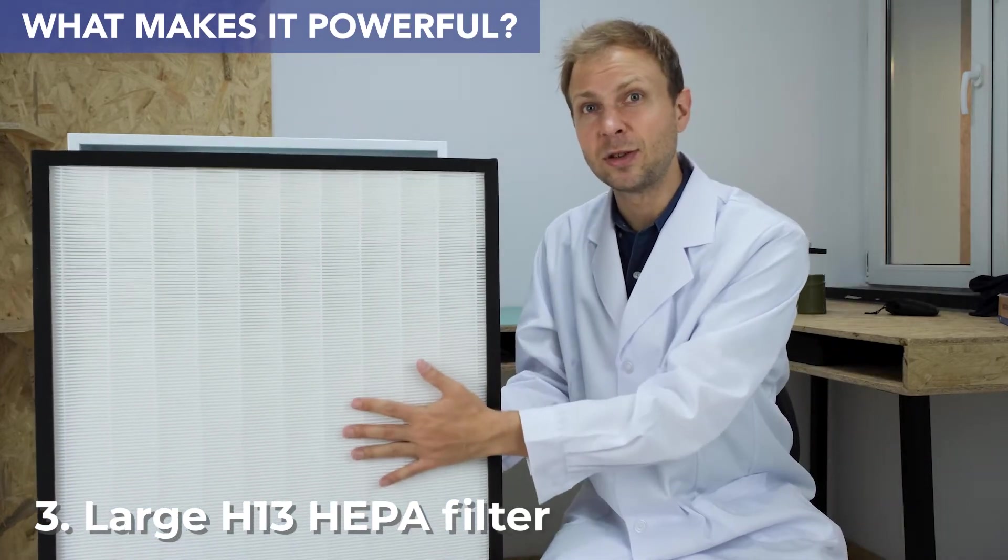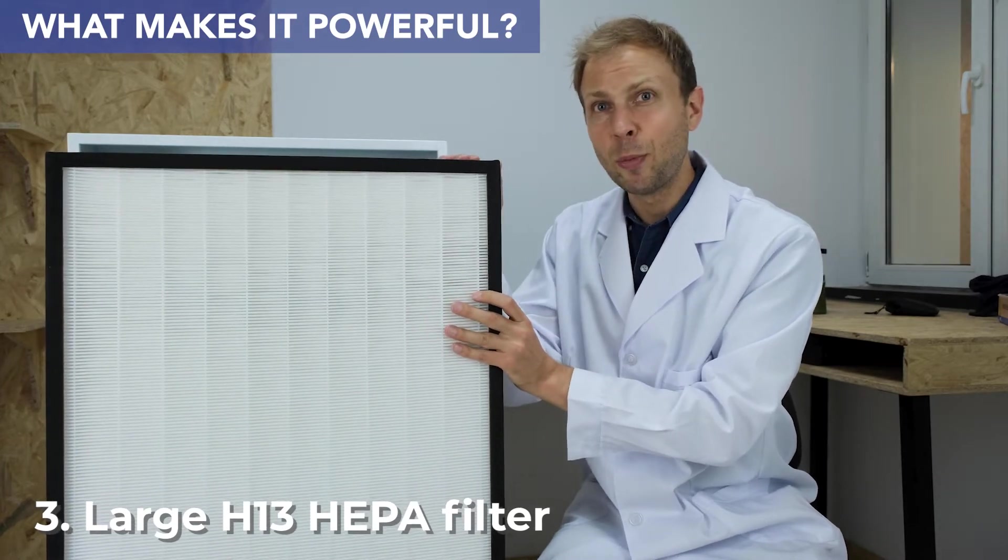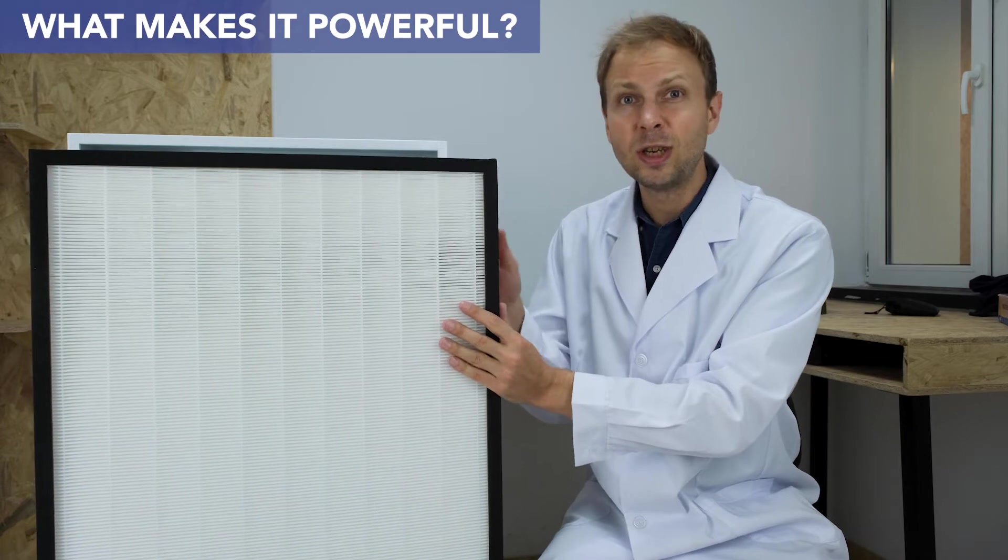So this is the HEPA filter I've just taken it out from the Blast and as you can see it's really big. This thing when opened up is the equivalent of 14 square meters. That's another reason why we can make the Blast so powerful and so quiet.